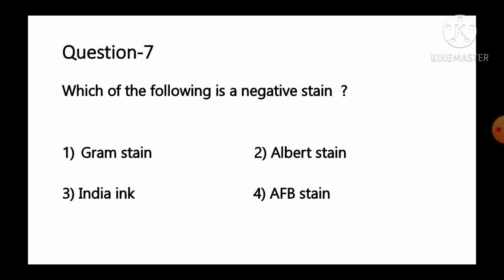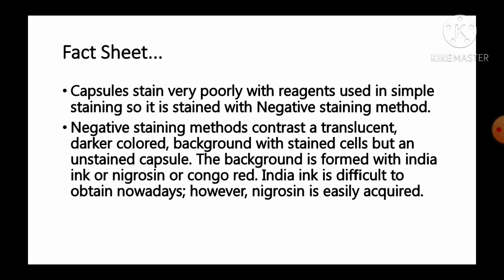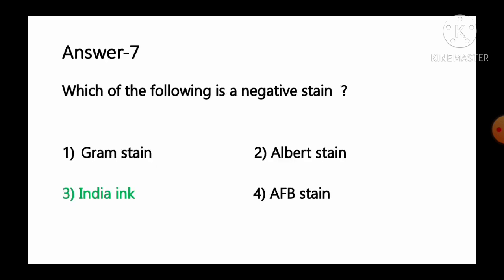Question number 7: Which of the following is a negative stain? Options: 1 Gram stain, 2 Albert stain, 3 India ink, 4 AFB stain. Capsules stain very poorly with reagents used in simple staining, so they are stained with the negative staining method. The background is formed with India ink, nigrosine, or Congo red. So option number 3, India ink, is the correct answer.